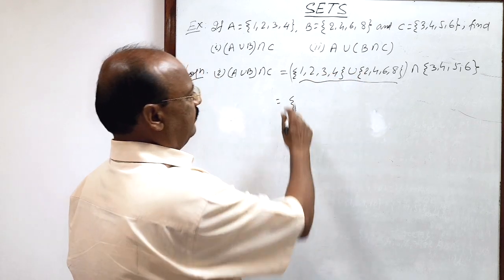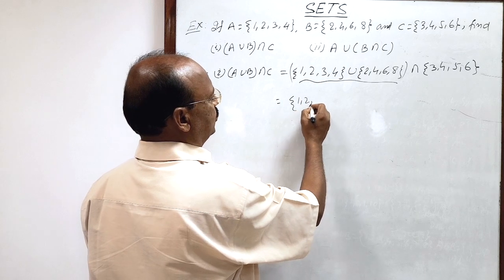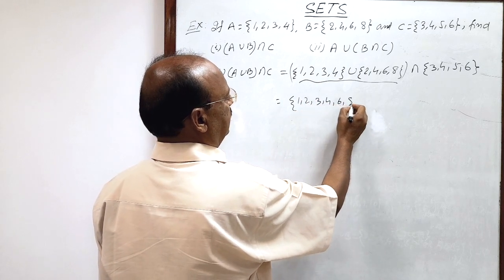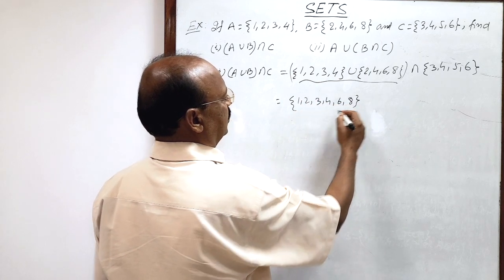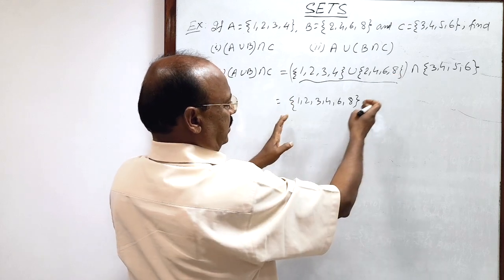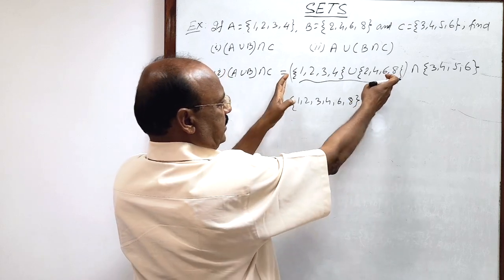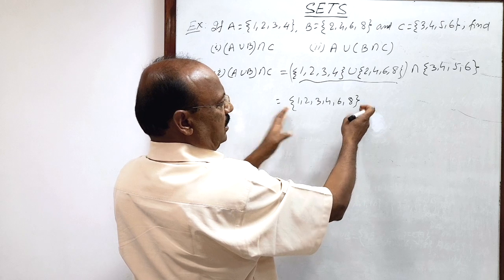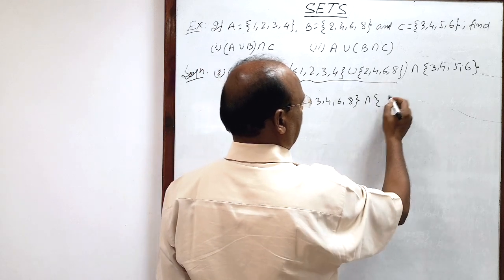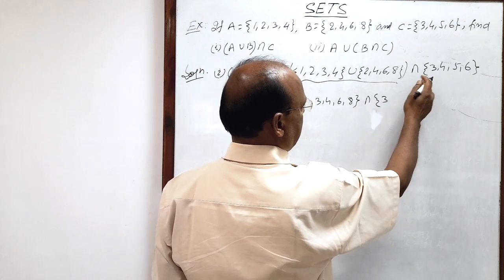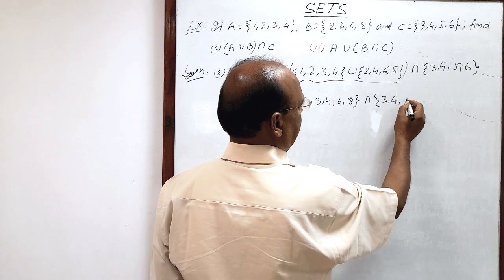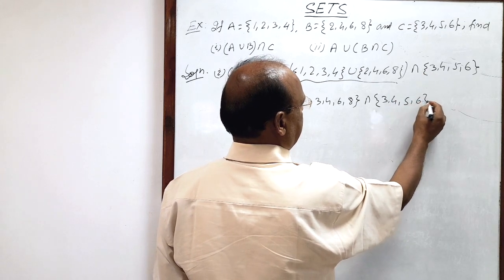So A∪B gives us the elements {1, 2, 3, 4, 6, 8}. This part is done. Now we have this result set intersected with C, which has elements {3, 4, 5, 6}.